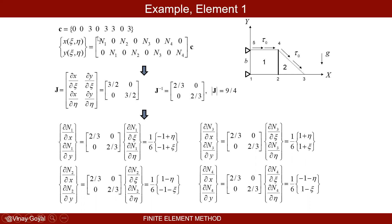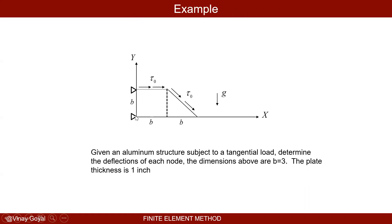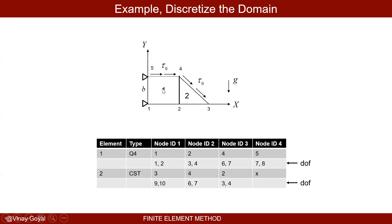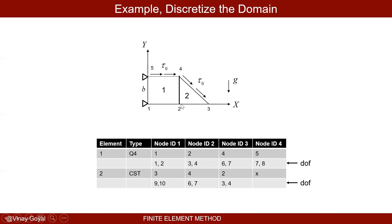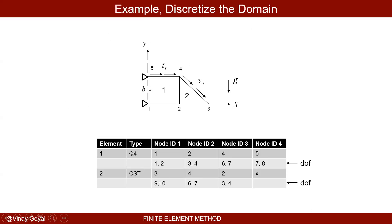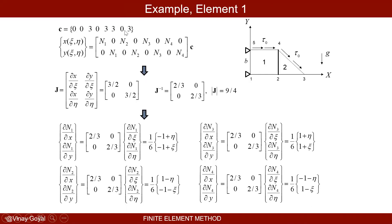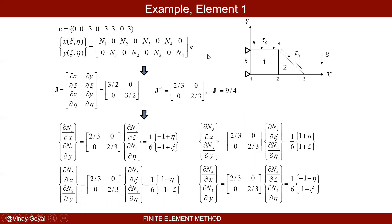Let's tackle the square element. We need to specify coordinates following the same order as the connectivity: node one at (0,0), node two at (3,0), node four at (3,3), and node five at (0,3). The shape functions for a square element are well known, and since I'm using an isoparametric formulation, this applies even for quadrilateral elements.